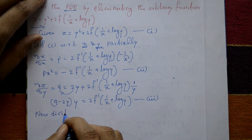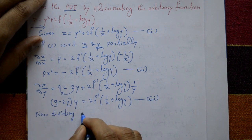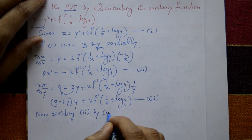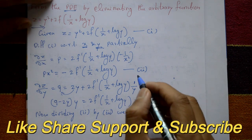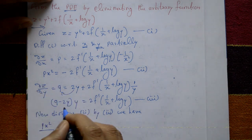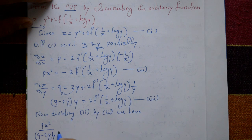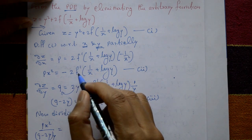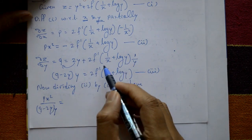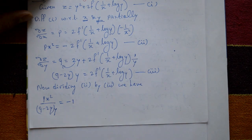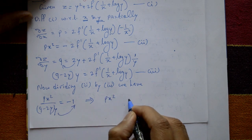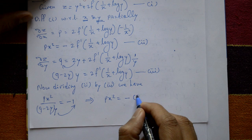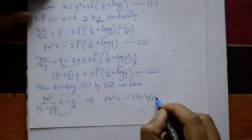Now dividing equation 2 by equation 3. Left-hand side: px² divided by (q minus 2y) times y. Right-hand side: both the 2f dash terms cancel, leaving minus 1. Cross-multiplying: px² equals minus (q minus 2y) times y.